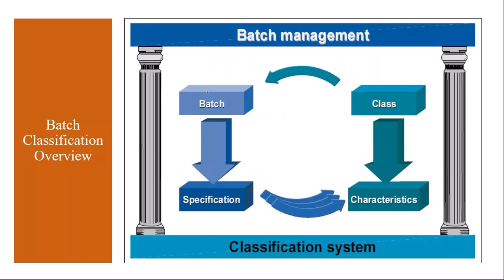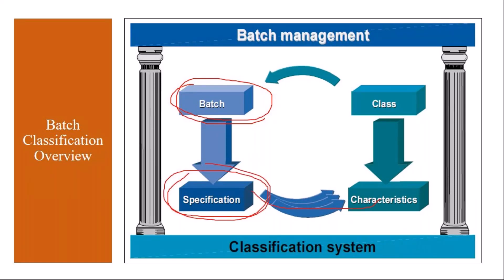You have the batches; the batch specifications are maintained in the form of characteristics. These characteristics are assigned to a class, and this class is assigned to the batch. This is how the batch management and classification system work together.